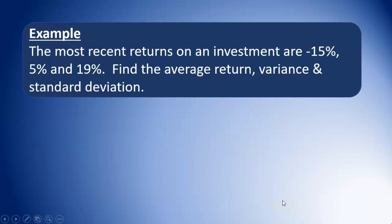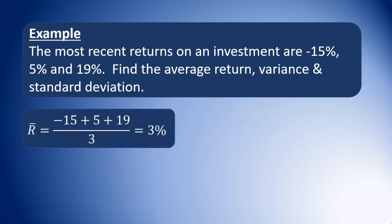So let's look at an example. The most recent returns on an investment are negative 15%, 5%, and 19%. Find the average return, variance, and standard deviation for this investment. For average return, we add up and divide by 3, since there are 3 returns. So negative 15 plus 5 is negative 10, plus 19 is 9, all divided by 3, giving us 3% for the average return.